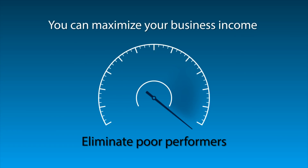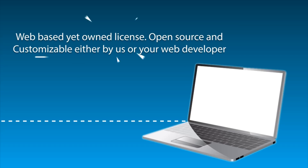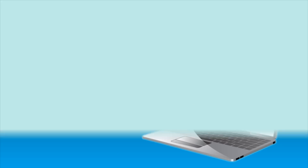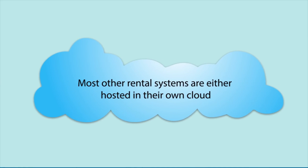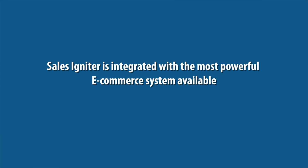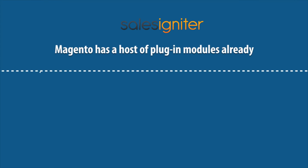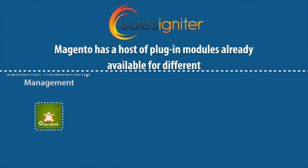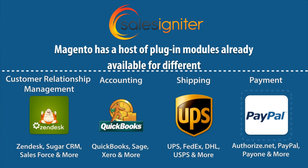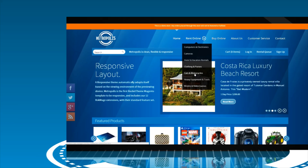Quickly identifies your top performing rental products by profit with many built-in reports, so you can maximize your business income and eliminate poor performers. Web-based yet owned license — open source and customizable, either by us or your web developer. Most other rental systems are either hosted in their own cloud, meaning you are stuck with them forever, or purely Windows or Mac install-type software. Sales Igniter is integrated with the most powerful e-commerce system available: Magento. Magento has a host of plug-in modules already available for customer relationship management, accounting, shipping, and payment integrations. Customers can browse and rent products online.